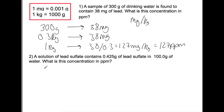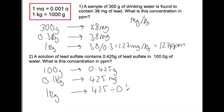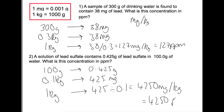In the second example, we have 100 grams of water containing 0.425 grams of lead sulfate. We need to convert both sides: 100 grams becomes 0.1 kilograms, and 0.425 grams becomes 425 milligrams. To scale up to 1 kilogram, we divide both sides by 0.1, giving 4250 milligrams per kilogram, which is 4250 parts per million.